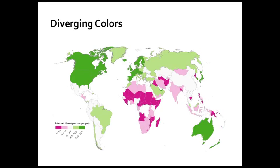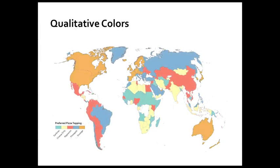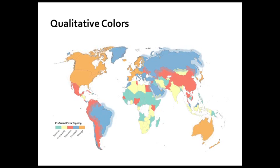Diverging schemes like this are great for showing what's above and below normal. Now here's the appropriate use of a qualitative color scheme. Say every country in the world voted on one preferred pizza topping. Australia, the United States, and Canada love sausage. Brazil is really excited about pineapple, along with Saudi Arabia and Russia — which totally makes sense, right? Qualitative colors make sense here because a named hue corresponds to the fact that we have very different answers that aren't comparable. Pineapple is not more or less than pepperoni — they're just different things. When you have categorically different things to show, qualitative colors make a lot of sense.